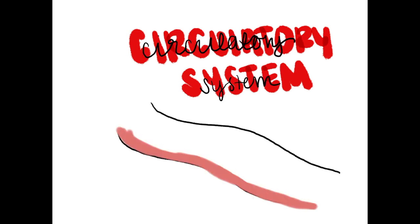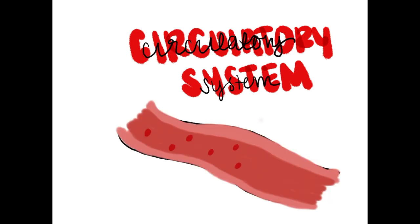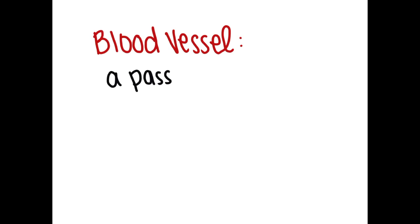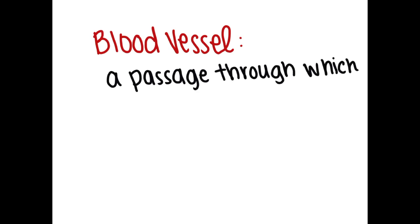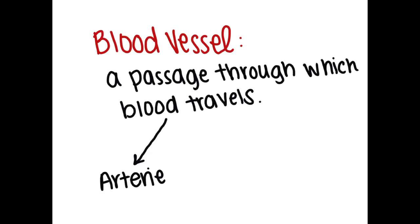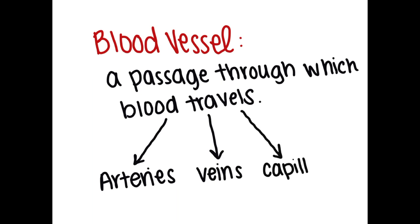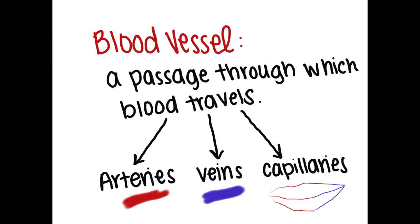Today we're going to talk more about the circulatory system, specifically the different blood vessels we have. First of all, we should determine a solid definition for what a blood vessel is in the first place. A blood vessel is a passage through which blood travels. The types we will be talking about today are the arteries, veins, and capillaries.